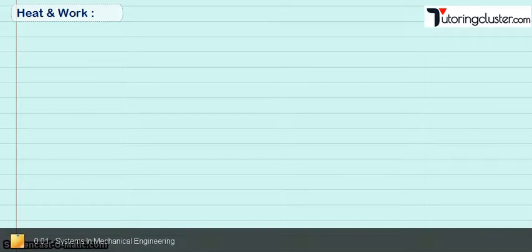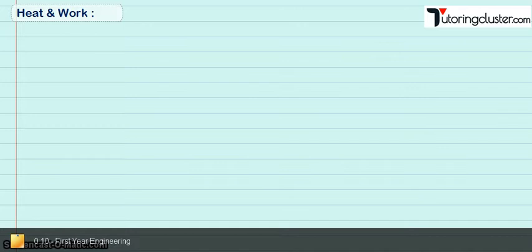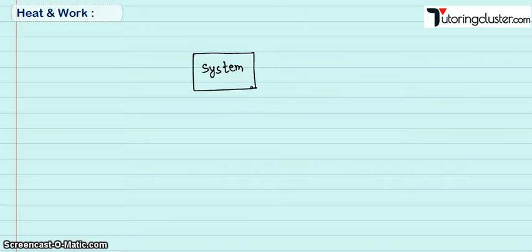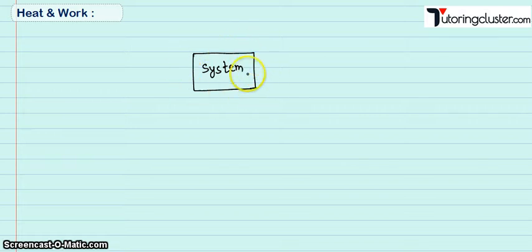Hello students, welcome to tutoringcluster.com. In the last video we have seen about types of systems, so now you know what a system is. In this video we are going to talk about heat and work interaction. Consider a system — this is the boundary and outside the boundary there is the surrounding.